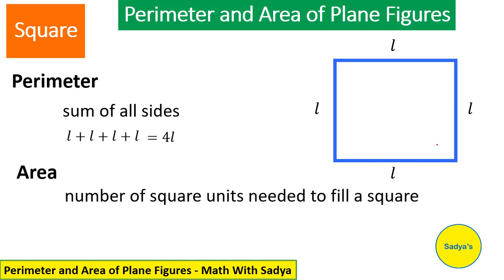The area of the square basically means how many number of square units are needed to fill a square. Or in easy words, we can simply find area by multiplying the length of the square with its breadth. Length is L and breadth is also L. So, L multiplied by L which is L square. The area of a square is equal to L square, the square of length.